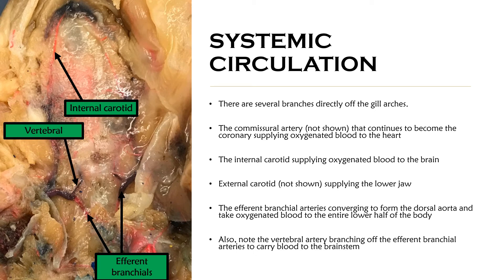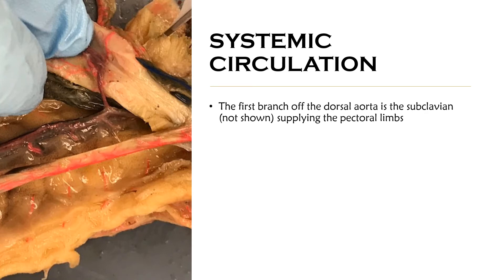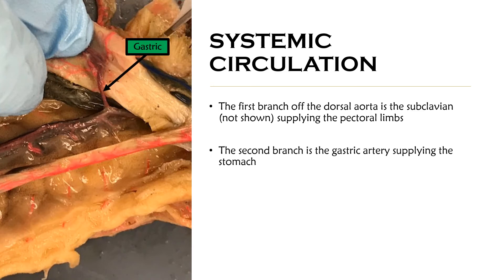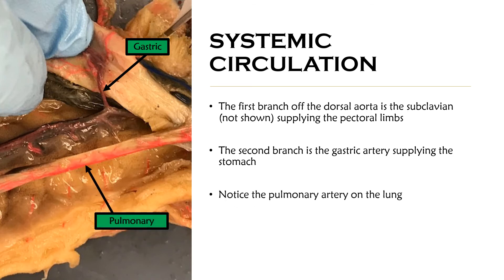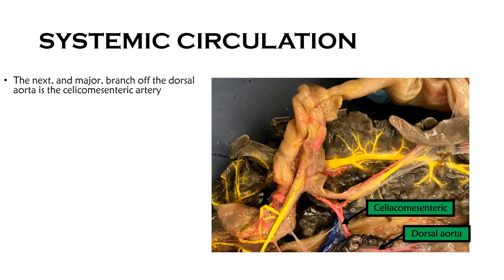Note the vertebral artery branching off the efferent bronchial arteries — the vertebral carries blood to the brain stem. Moving down the dorsal aorta, the first branch is the subclavian, which isn't shown, but the subclavian is always supplying the pectoral limbs with oxygenated blood. The first major branch off the dorsal aorta is the gastric artery supplying the stomach. Also note the pulmonary artery on the lung — mud puppies have underdeveloped lungs but they do have a pulmonary circuit.